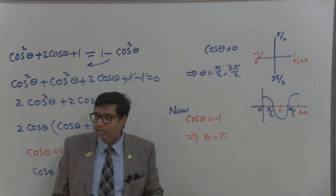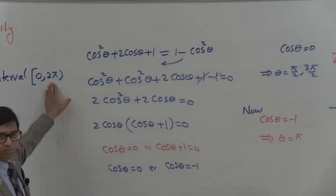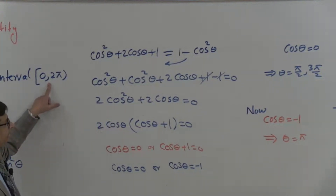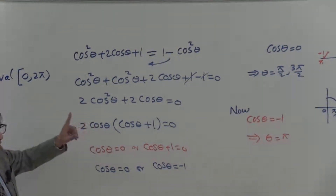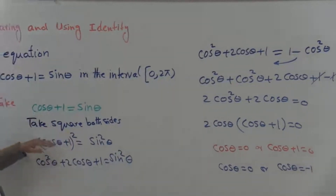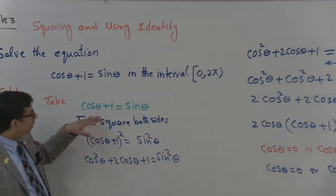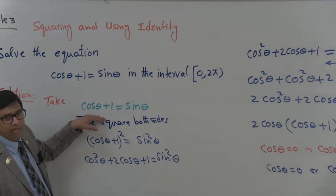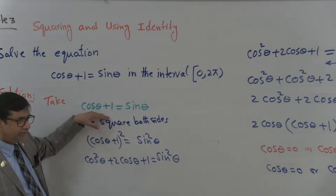But we have to find our answer within the given domain, which is 0 to 2 pi. Pi over 2, 3 pi over 2, and pi are all in this domain. However, we are not sure these values will satisfy the original equation, because we made a change by taking the square of both sides. So we must check each value at the end—do not accept the answer directly until we verify both sides are equal.